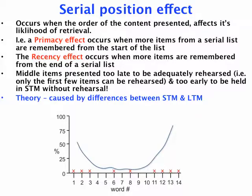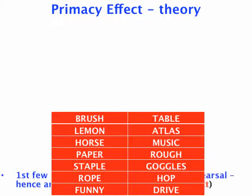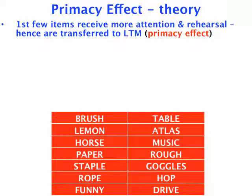In terms of the theory behind why we have a primacy and a recency effect, it's got to do with the differences between short-term and long-term memory. In terms of the primacy effect, why do we have superior recall of those early items? It's got to do with the additional attention and rehearsal that those items received. Given the two-second interval, that's enough time to sub-vocalize the first word, then the second, then rehearse both together, and continue building up — brush, lemon, horse, paper, and so on. We can do that up to a point.